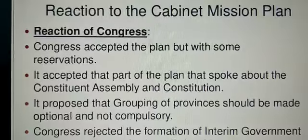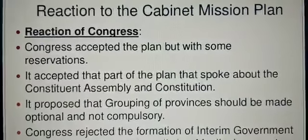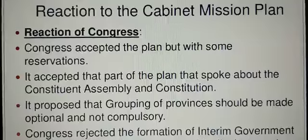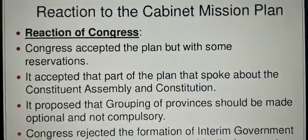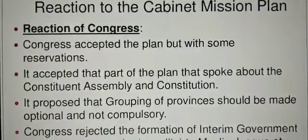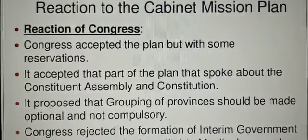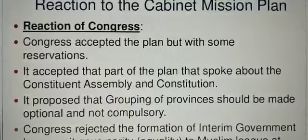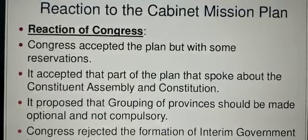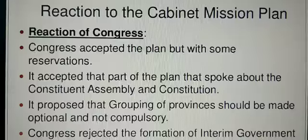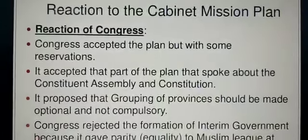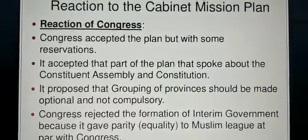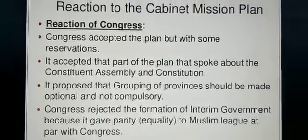Congress proposed that the grouping of provinces should be made optional and not compulsory — people from provinces assigned to one group should be free to join any other group. Congress also rejected the formation of the interim government because it gave equality to the Muslim League at par with Congress.